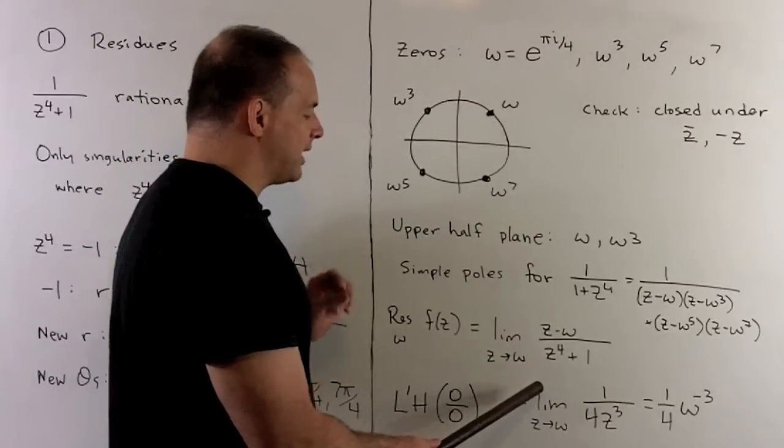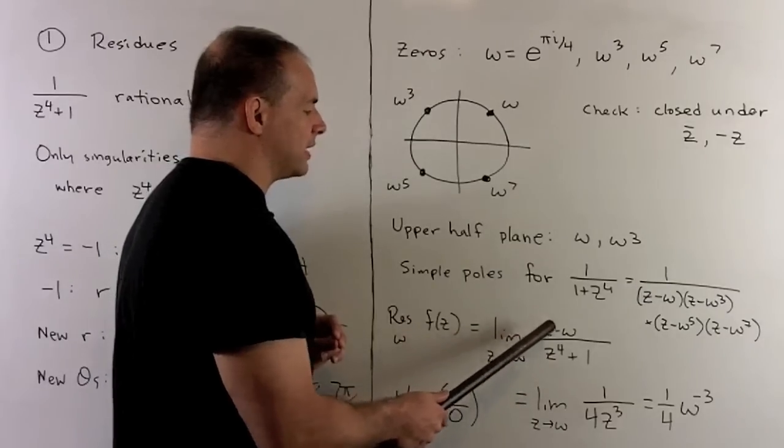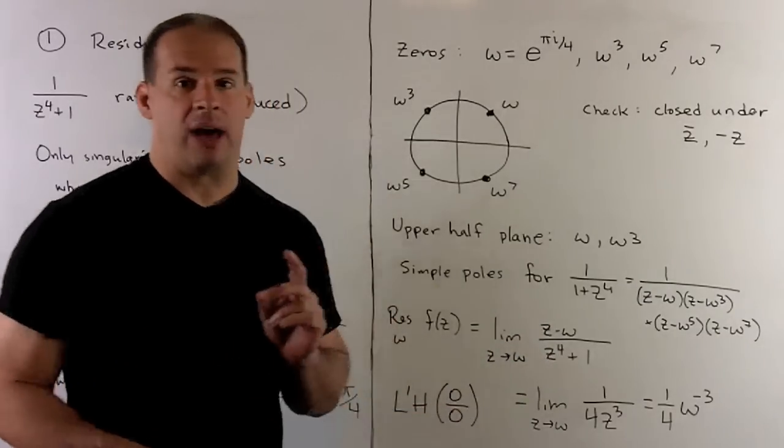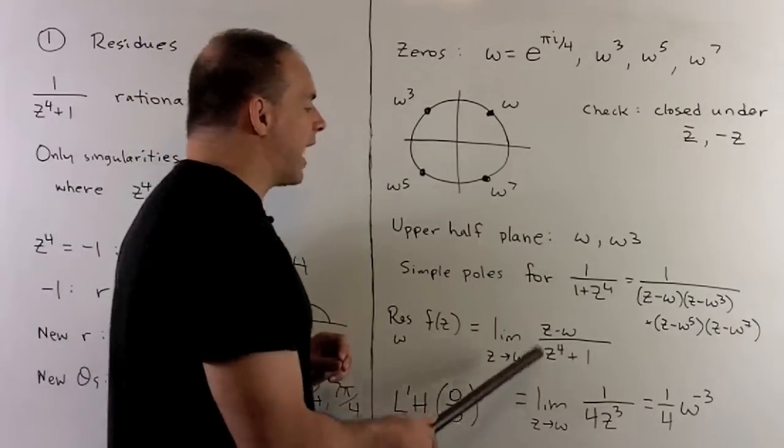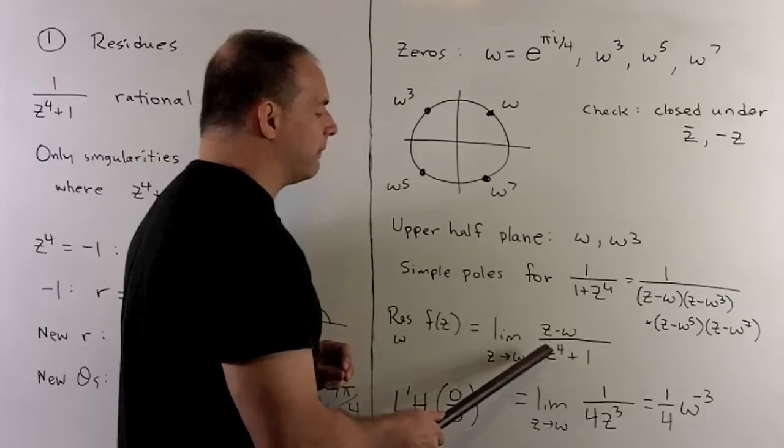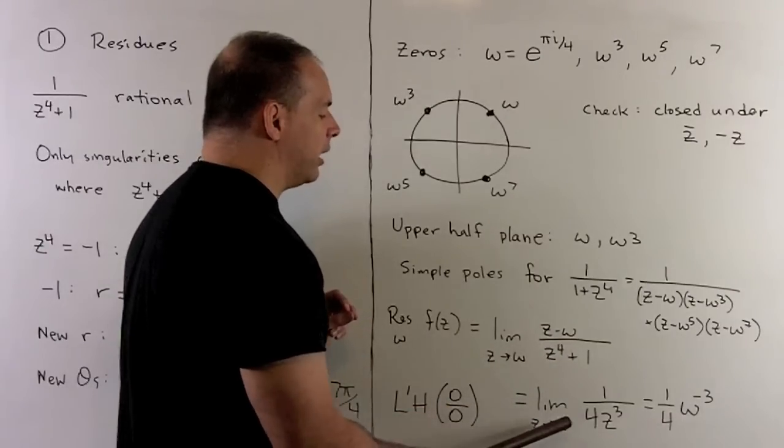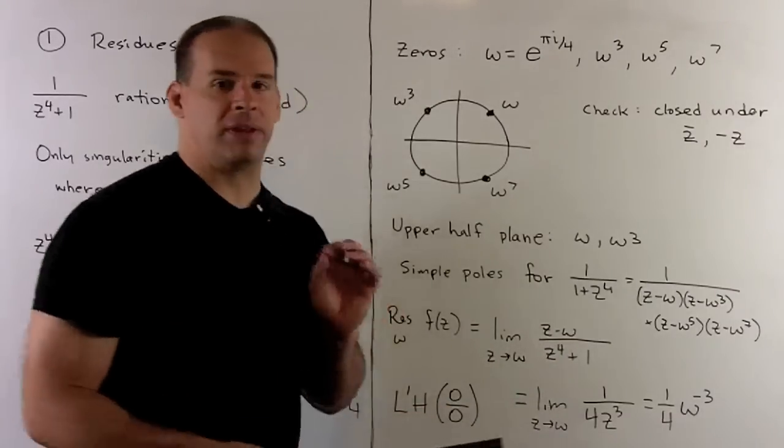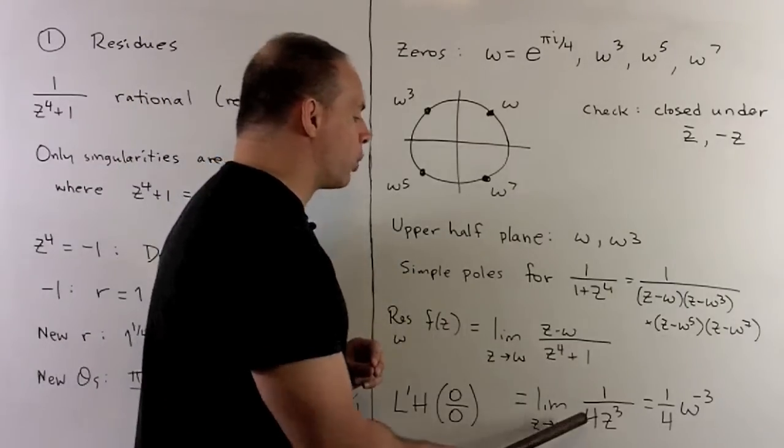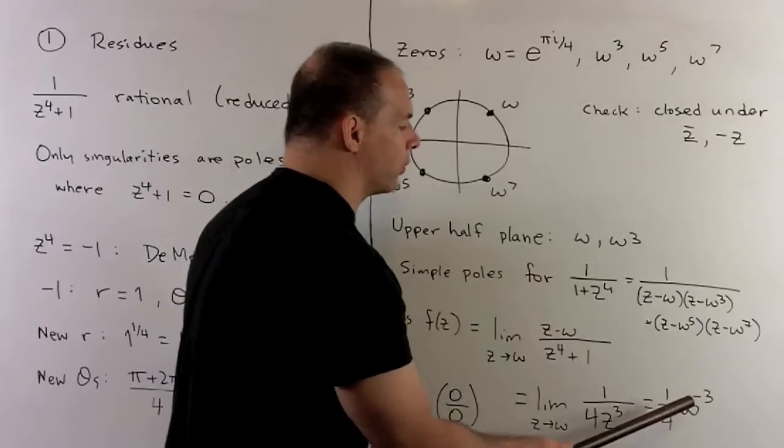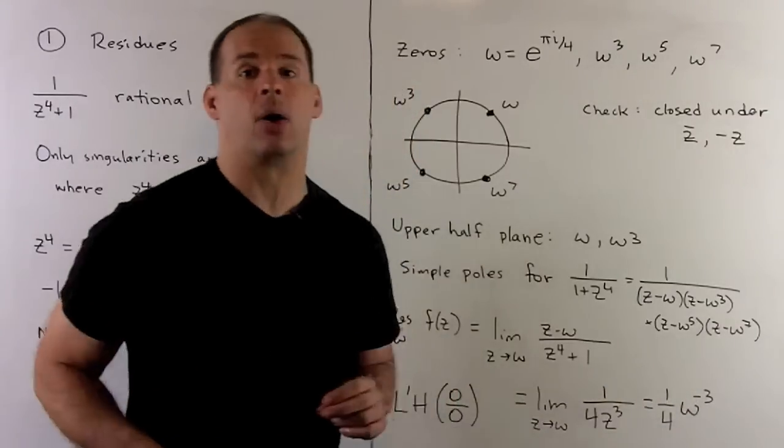Then, what does that say? Well, we can take derivative at the top, derivative at the bottom, and then try to evaluate again. So, I do that. I'll have a 1 on top. At the bottom, we get 4 z cubed. So, if we evaluate at omega, we get something that's perfectly valid. I'll have 1 over 4 times omega cubed, or 1 fourth omega to the minus third power.